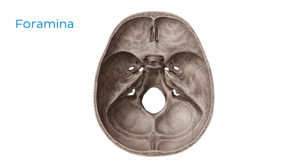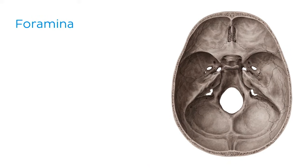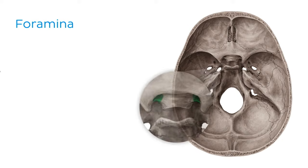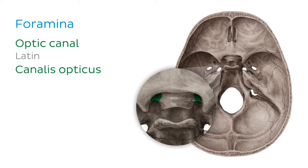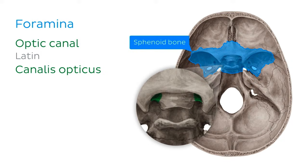Most foramina are located at the base of the skull, so we're going to look again at the images of the base of the skull, like this superior view. Here you can find the first one, known as the optic canal. It is centrally located in the sphenoid bone, forming part of the middle cranial fossa. The optic nerve and the ophthalmic artery pass through the optic canal.